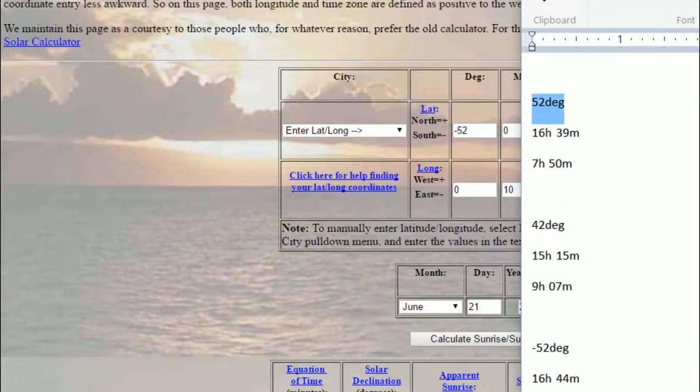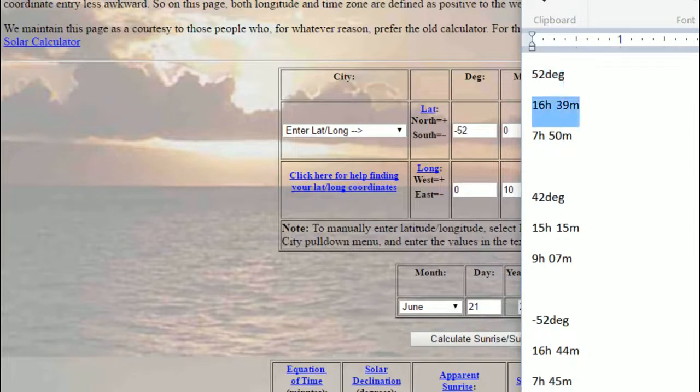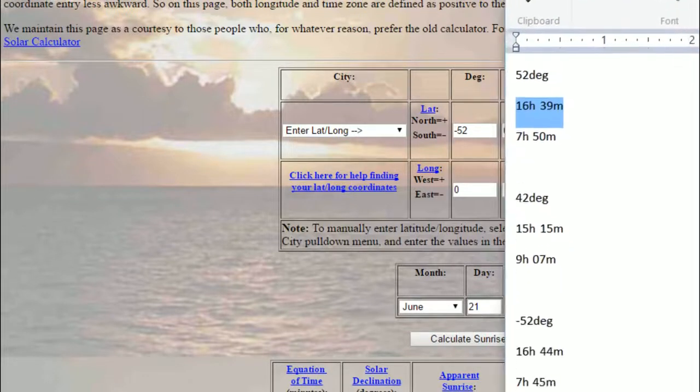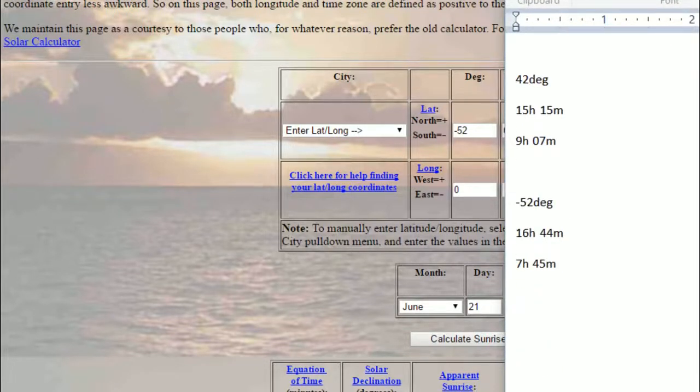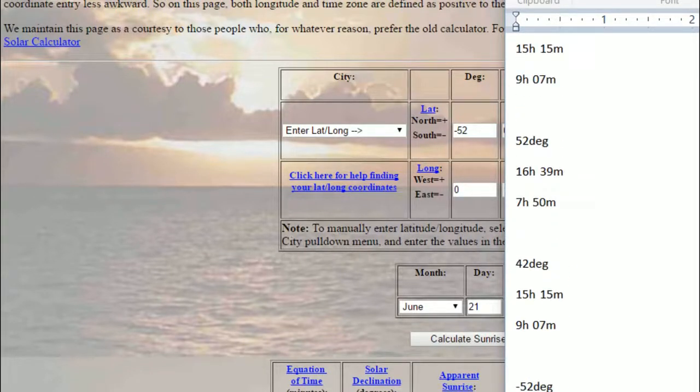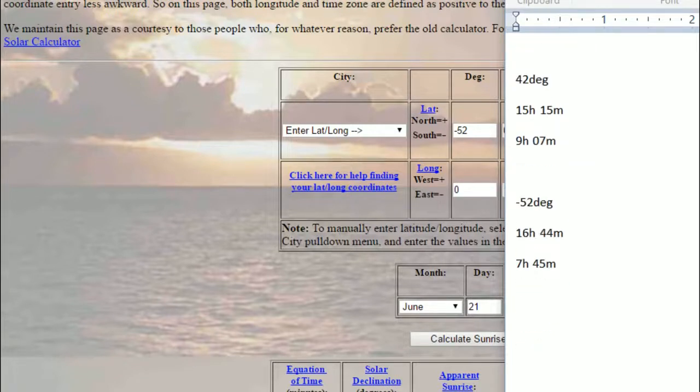Even like this 52 degrees north which is in England, the longest day of the year in the summer, 16 hours 39 minutes. Compare that to 52 degrees south, you get a very close proximity approximation, 16 hours and 44 minutes, just five minutes off. So there's nothing there. Even the shortest day of the year, seven hours and 50 versus seven hours and 45, five minute difference.